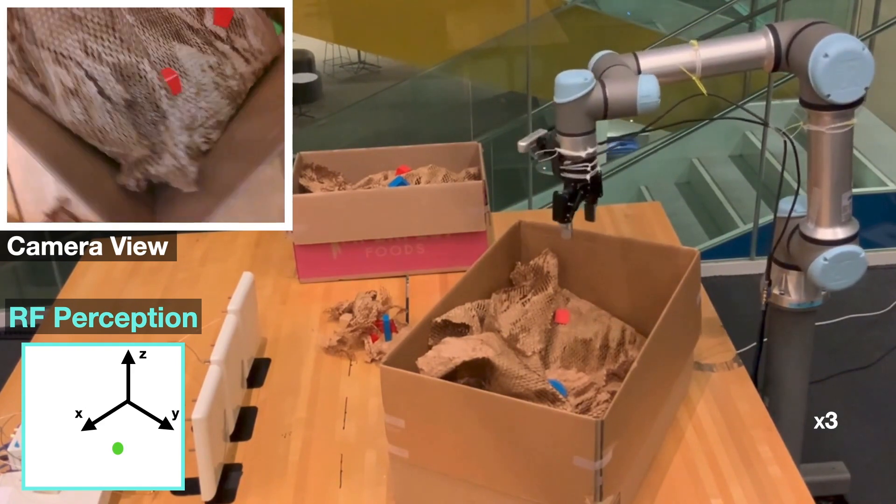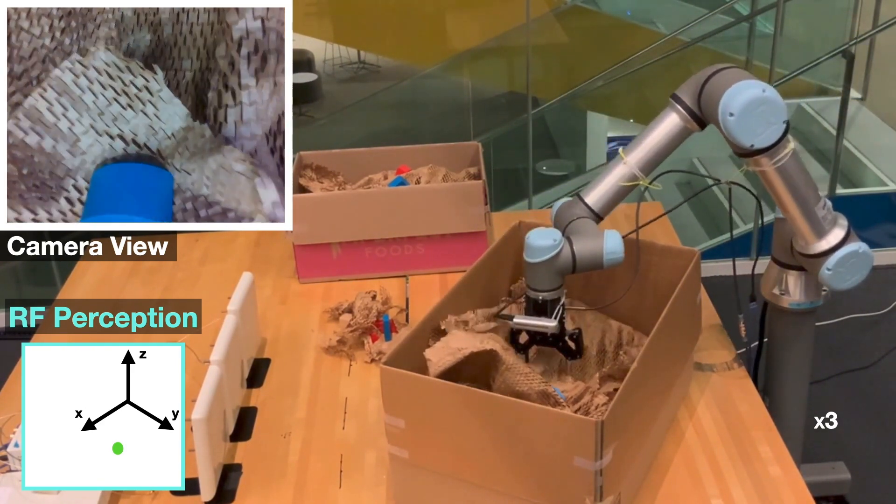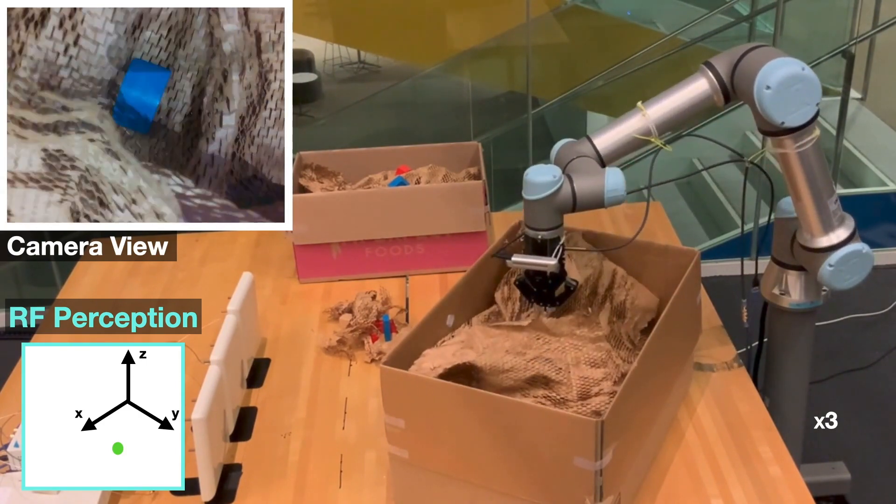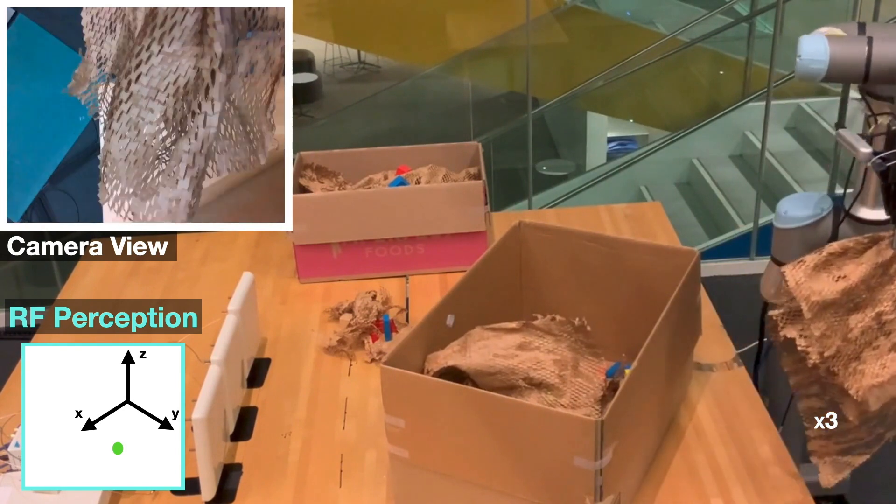Once it determines that the object is within its reach, it moves to a second phase which is called RF visual grasping. Although it cannot see the target object, it knows where it is due to the RF perception.